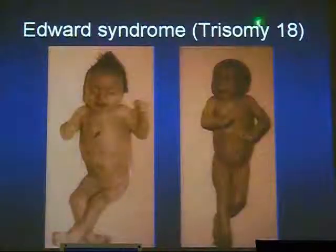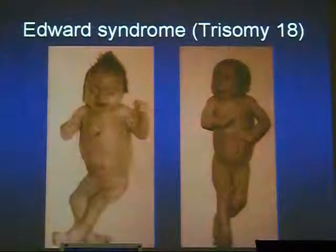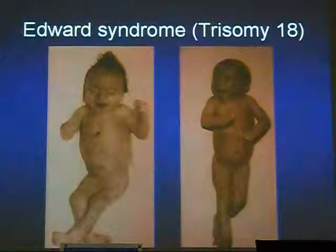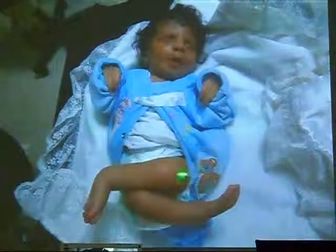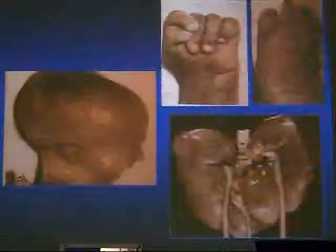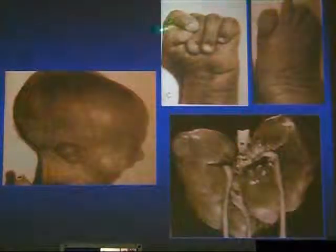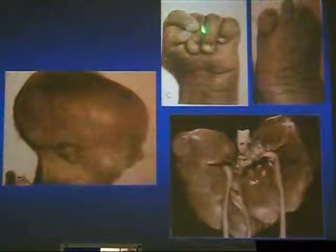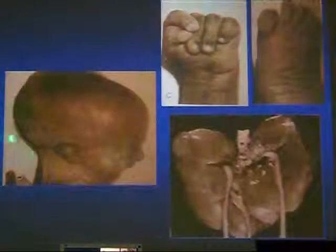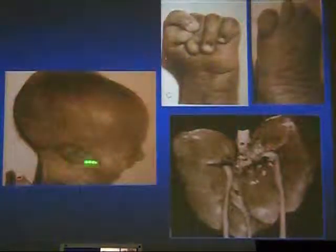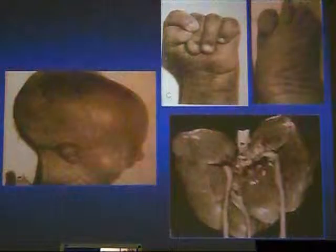Edwards syndrome or trisomy 18 usually presents with congenital cataract, feet that are crossed over each other, clenched hands with overriding of the thumb over the third finger, a large occiput, small low-set ears, and a horseshoe kidney.